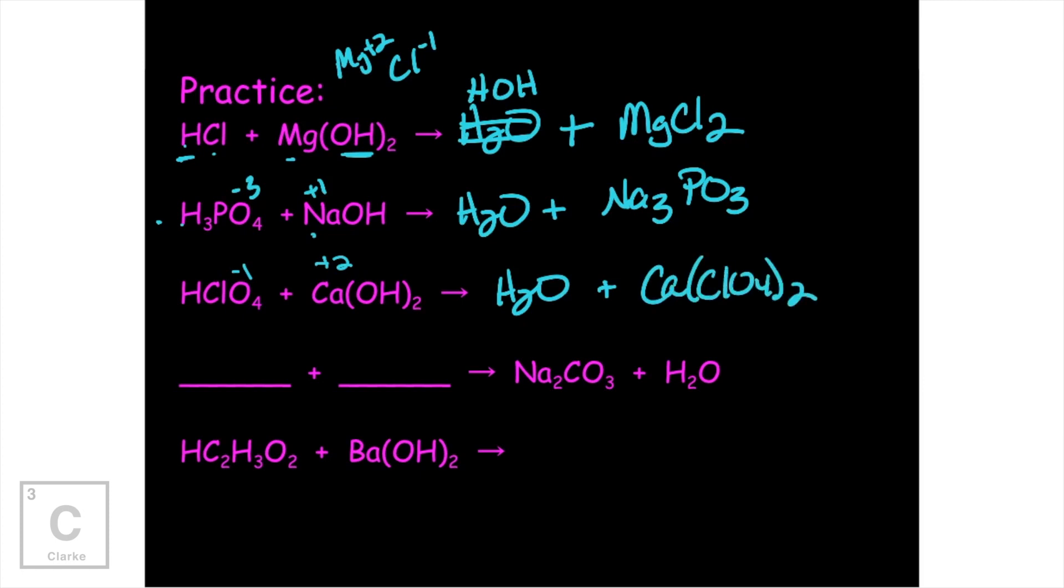This next one, I'm giving you the salt and water. And you've got to come up with the acid and the base. So remember, water is HOH. So if we were to undo this, H is going to get with carbonate. H is a one. Carbonate is a two. So that's going to give us H2CO3. Carbonate is a two. Hydrogen is a one. And then that's going to leave sodium to get with hydroxide. They're both ones. So that's just going to be NaOH. There's our acid. There's our base.